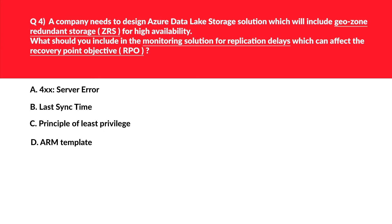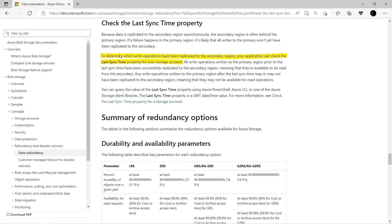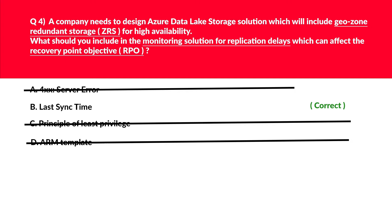This question is about RPO and ZRS. Options C and D — principle of least privilege and ARM templates — are totally off topic, so we'll reject these. Option A — 5xx server errors — server errors are in no way associated with replication delays for RPOs, so again incorrect. Quick tip: whenever you see keywords like ZRS and RPO in the same question, 'last sync time' should strike your mind. As per the official documentation, to determine whether a write operation has been replicated to the secondary region, check the last sync time property for your storage account. Therefore B is the correct answer.